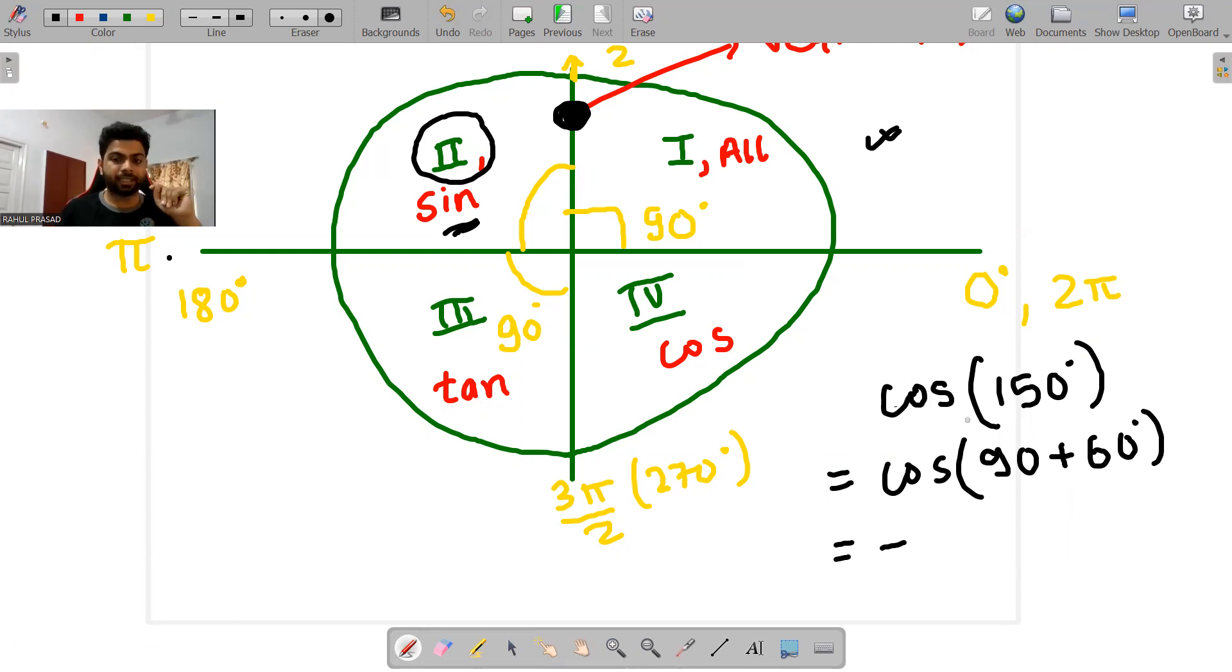First step. Second step: it's 90 plus, means again it is lying along this vertical line, so what will happen? The function will change. Cos will get changed to sine. So cos 90 plus theta is equal to minus sine of theta. Theta is 60 degrees. Minus sine 60. Sine 60, if we remember, is root 3 over 2. So my value will be minus root 3 over 2.